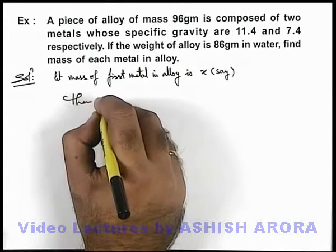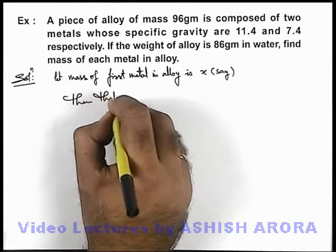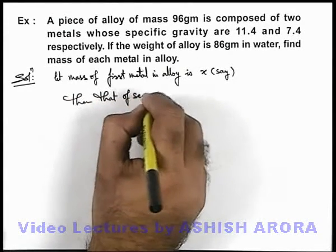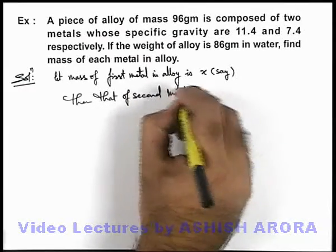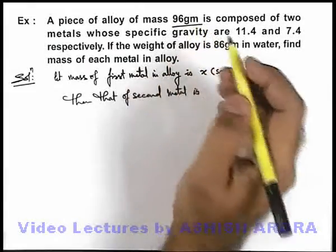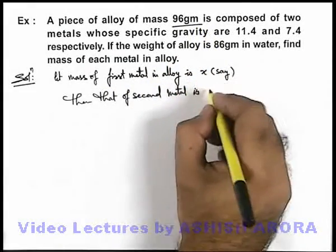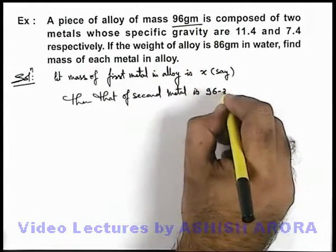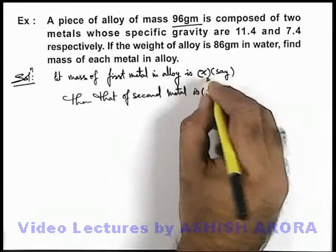That of second metal is—total mass is 96 grams—for the first metal if it is x, it can be written as 96 minus x. And obviously we are taking it in grams.